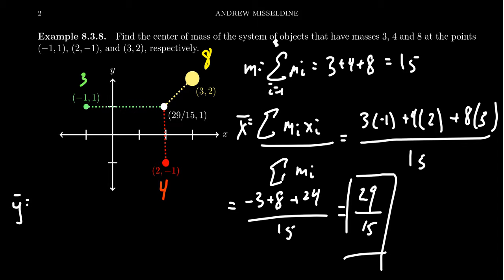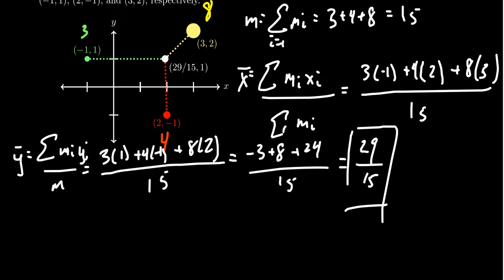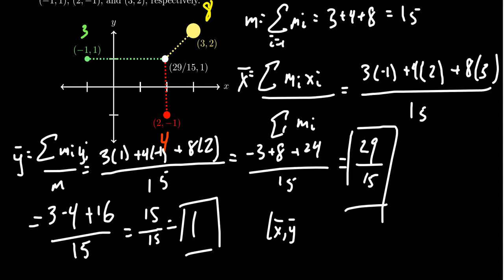Y-bar is computed similarly. We first start off with this moment, miyi over the total mass. In which case, again, this is all over 15. This time, though, it's giving me a similar sum. It's just that we're going to use y-coordinates instead of x-coordinates this time. We get 3 times 1 for the green one. We're going to get 4 times negative 1 for the red one. And we're going to get 8 times 2 for the yellow one. In which case, we get 3 minus 4 plus 16, all over 15. 3 minus 4 is negative 1 plus 16 is 15. So we get 15 over 15, which is equal to 1. And so the y-coordinate of the center of mass here would be 1. So in particular, our centroid for this system of three objects would be 29 over 15 comma 1. And so we calculate this weighted average of the x-coordinates. We calculate the weighted average of the y-coordinates. And this gives us the center of mass.